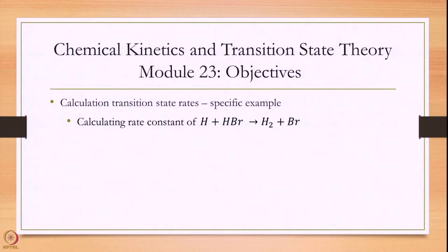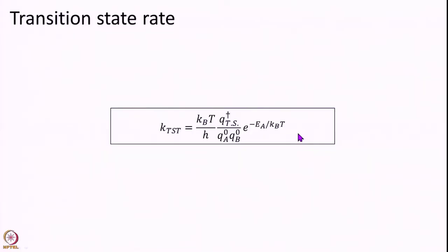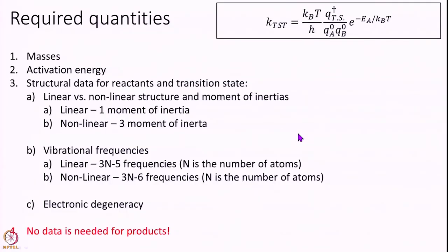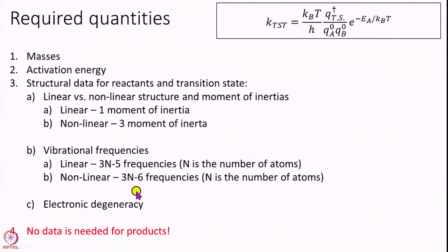In your assignments you will be solving more such problems for practice. This is the formula that we need to evaluate. The required quantities we need — and we discussed this in the last module — is a quick recap: we need all the masses of H and Br, which are readily available. We will need the activation energy of the reaction. We will need to find whether the reactants and transition state are linear or non-linear and what the corresponding frequencies are. We will finally need to look at the electronic degeneracy of the reactants and transition state.